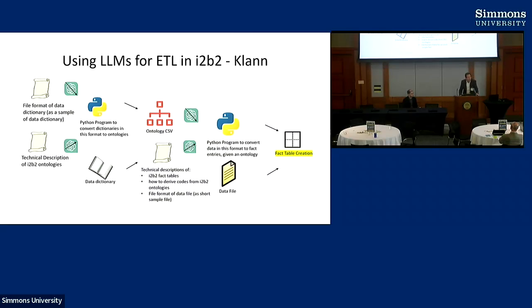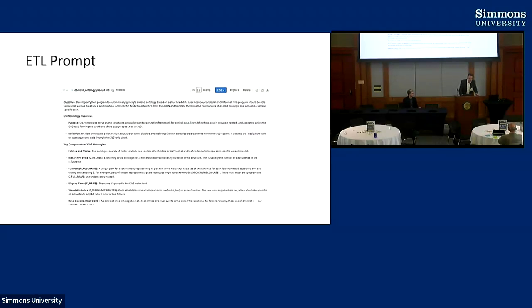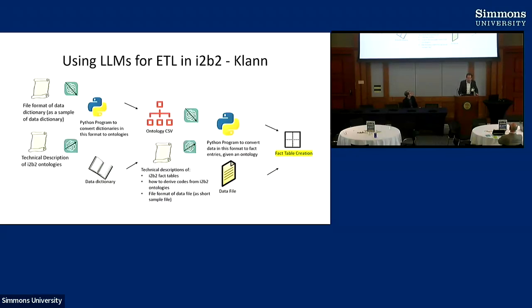The first thing we needed to tackle is getting tables of data into I2B2. Data often starts as a comma-separated value table with thousands of columns and many rows representing participants or patients. The first problem is getting it into an ontology. We need to extract it from whatever format we start with into an ontology, then transform the data into the I2B2 star schema to enable both the visualization and query tool.